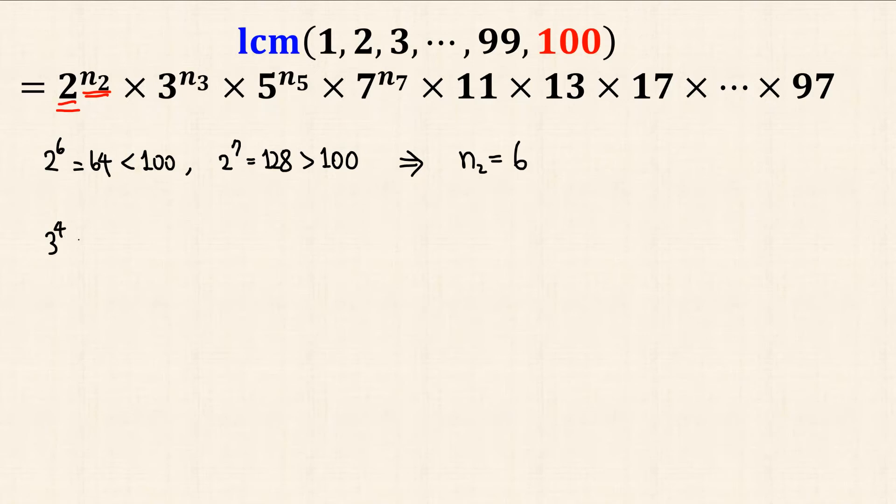Similarly, 3 to the power of 4 is less than 100, but 3 to the power of 5 is greater than 100, hence n3 equals 4.